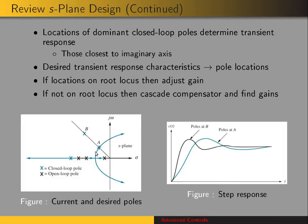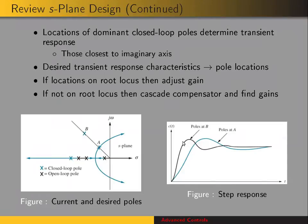Once we know our desired transient characteristics — say a desired settling time or maximum percent overshoot — that gives us the pole locations we want. If those pole locations happen to lie on the root locus, we can just adjust the gain. If they're not on the root locus, we have to cascade a compensator with the plant to change the root locus and have it intersect the desired poles. The figures show an uncompensated system and a compensated one with the same percent overshoot but different settling time.